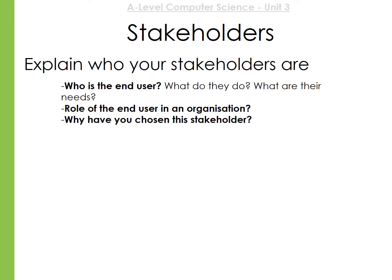Now it's time to complete this section in your work. You need to clearly explain who your stakeholders are: first, who is the user, what do they do, and what are their needs? You might talk about the role of the end user in an organisation. Make sure you explain why you've chosen these stakeholders and also why they are going to be interested in your system.